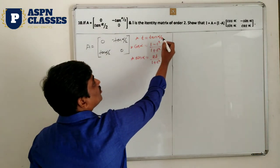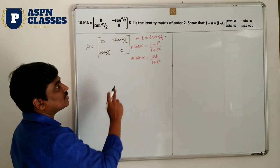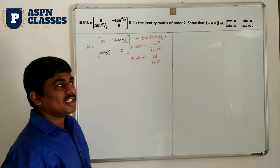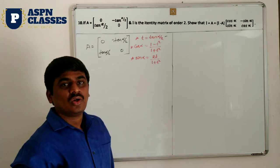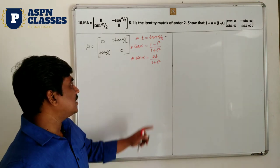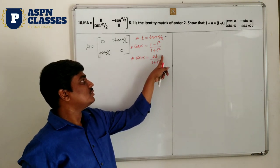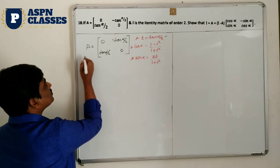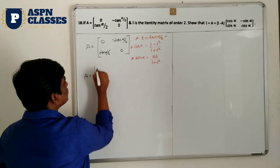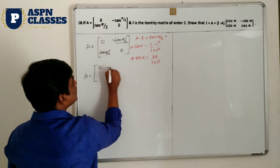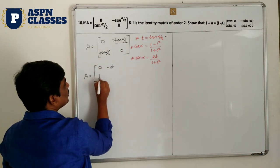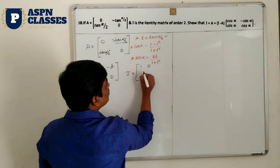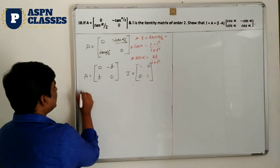Let T = tan(α/2). Then A matrix becomes [0, -T; T, 0]. We use the formulas: cos α = (1 - T²)/(1 + T²) and sin α = 2T/(1 + T²). Identity matrix I = [1, 0; 0, 1]. In LHS: I + A = [1, 0; 0, 1] + [0, -T; T, 0].